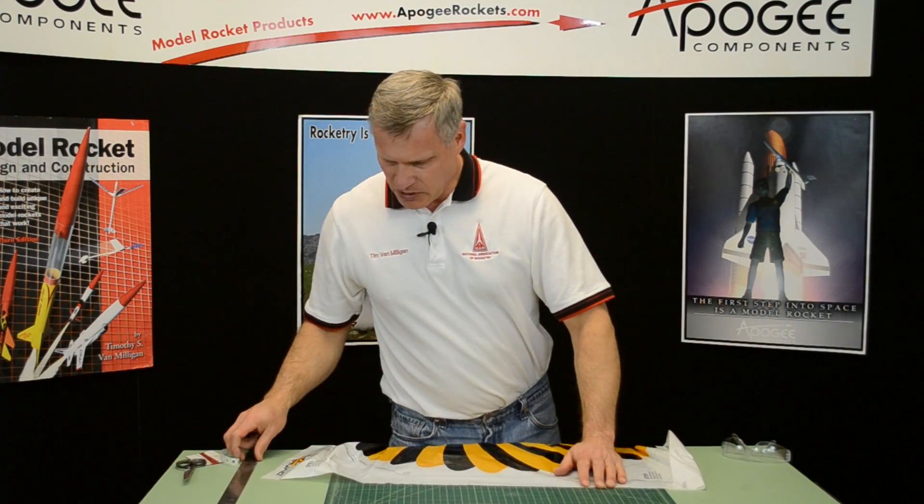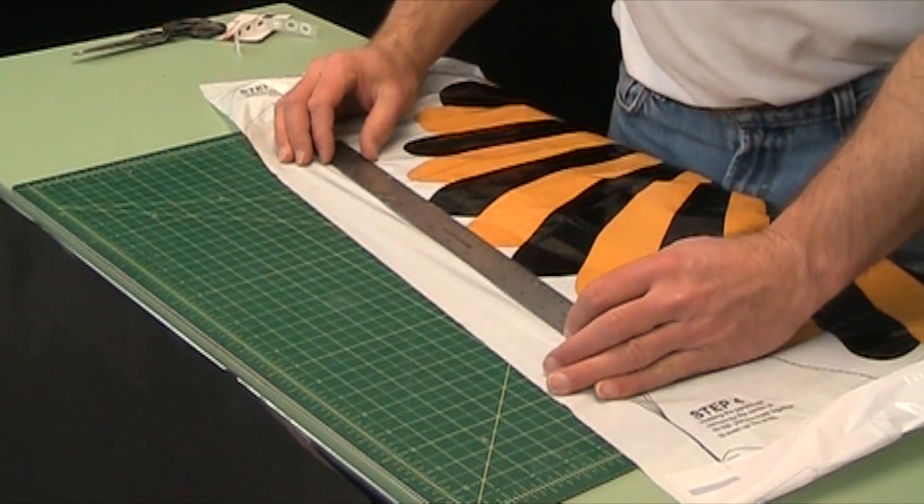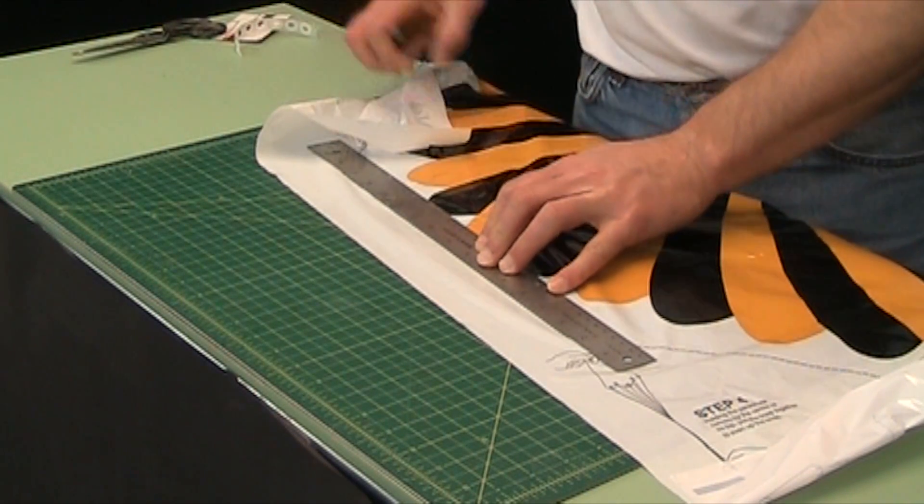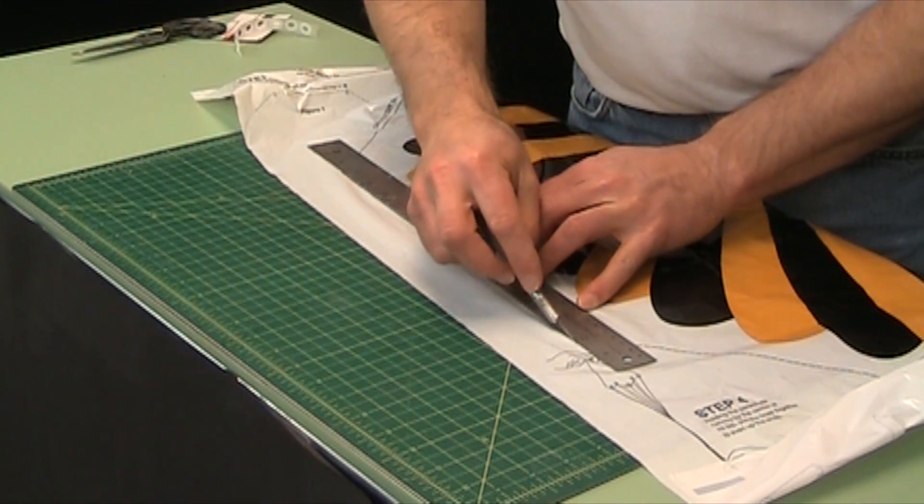You can use a hobby knife and a ruler. Just lay the ruler along the dotted line and go ahead and cut it out.